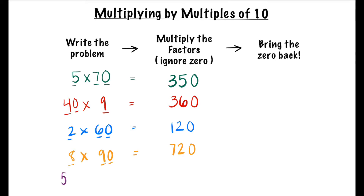Let's write the problem: 50 times 7. 50 is a multiple of 10, so we're going to multiply 5 and 7, which equals 35. Now let's bring the 0 back. We know 50 times 7 equals 350.